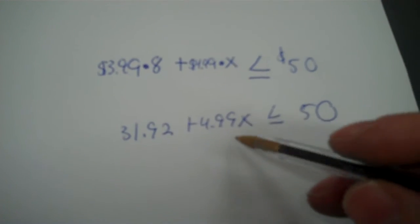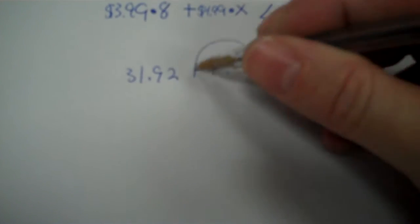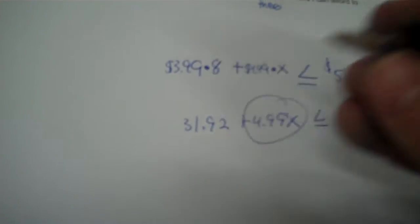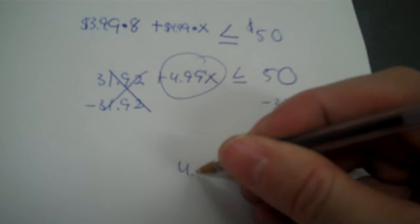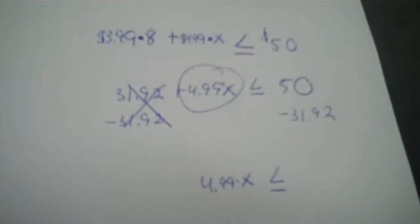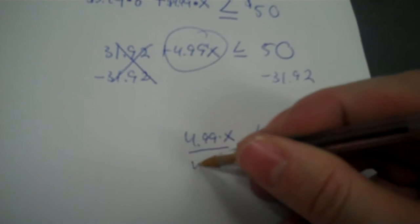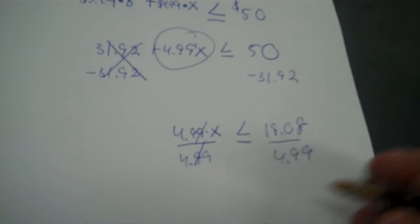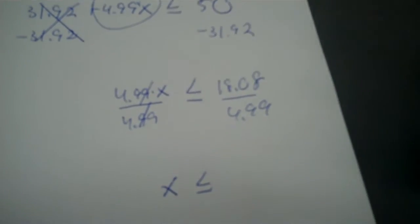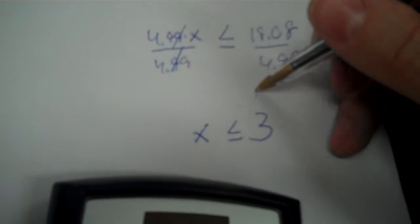You can drop the times dot — just crunch them together. Now get X by itself. We have a positive multiplier here, so get 31.92 to zero by subtracting: 50 minus 31.92 is 18.08. Then divide by 4.99. The sign stays the same — no flipping needed. I have less than this time, so I have to round down. That's just going to be 3. So I can afford a max of 3 bags, and anything less than 3 I can afford too.